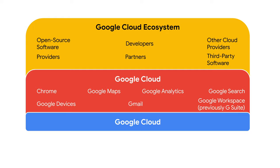Now, Google Cloud consists of Chrome, Google Devices, Google Maps, Gmail, Google Analytics, G Suite, Google Search, and the Google Cloud Platform. GCP itself is a computing solution platform that really encompasses three core features: infrastructure, platform, and software.